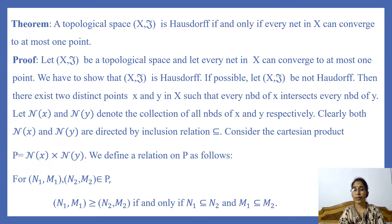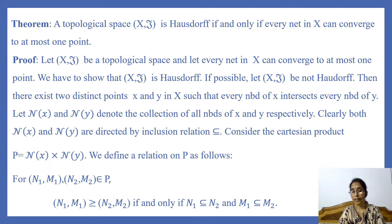Let X,T be a topological space and let every net in X converge to at most one point. We have to show that X,T is Hausdorff. If possible, let X,T be not Hausdorff. Then there exist two distinct points X and Y in X such that every neighborhood of X intersects every neighborhood of Y.